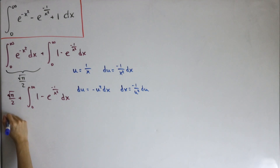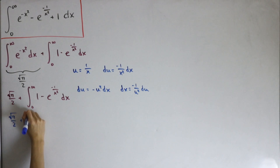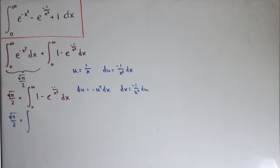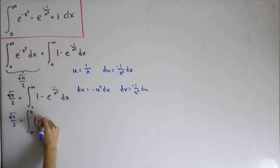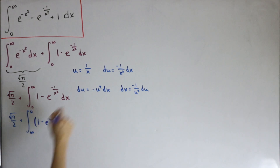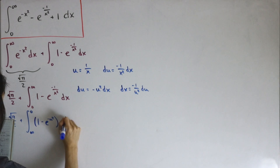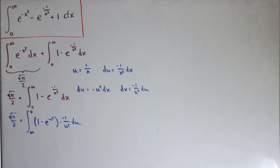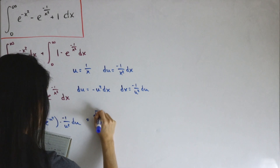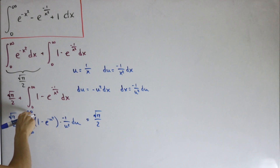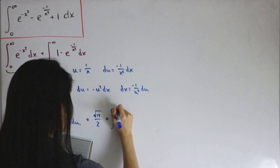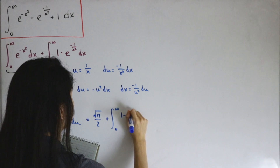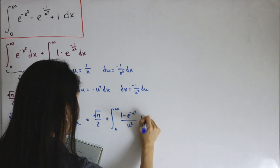Substituting back in, the bounds: plugging in infinity gives zero, and plugging in zero gives infinity. After the substitution, the integrand becomes one minus e to the negative u squared, times negative one divided by u squared. Flipping the bounds introduces a negative which cancels, giving us the integral from zero to infinity of one minus e to the negative u squared, divided by u squared, du.